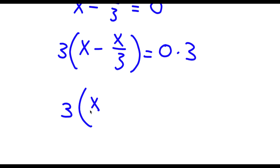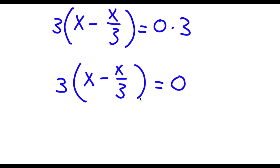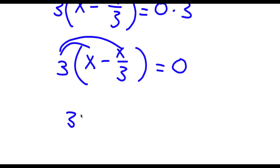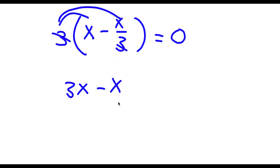Now I'm going to evaluate 3 times, in parentheses, x minus x over 3. I'm going to multiply 3 by all the terms in the parentheses. 3 times x is 3x. And 3 times negative x over 3 is simply negative x, because the two 3s cancel out. So now I have 3x minus x is equal to 0.